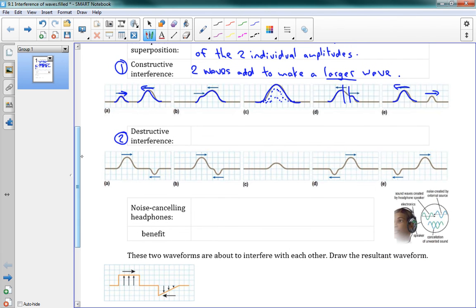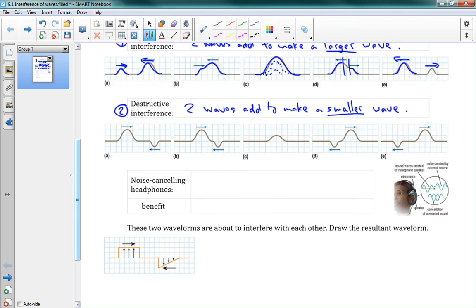The same idea with destructive interference, but this is when two waves add to make a smaller wave, and you can see it's the same picture below. We have our large positive wave and our small negative wave, and this is what makes it destructive, because one is on top and the other one is on bottom.